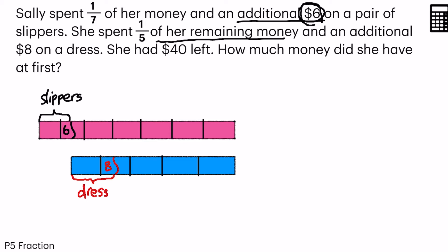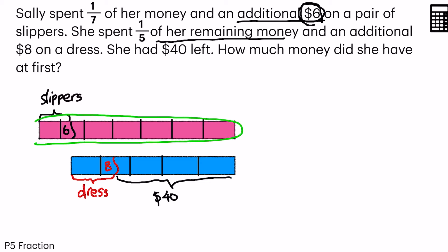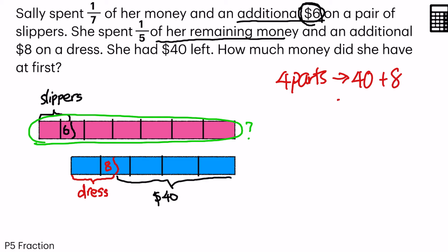Lastly, she had $40 left, which means this whole portion here is equal to $40. How much money did she have at first? Now, this $40 — if I add this $8 here, it will become 1, 2, 3, 4 parts. So 4 parts is equal to 40 plus 8, which equals 48.